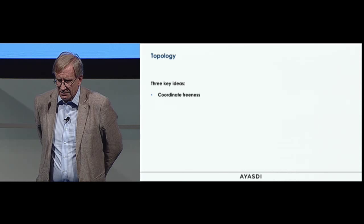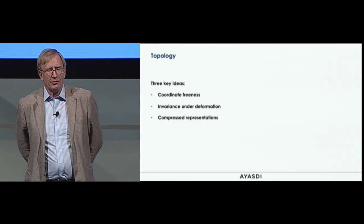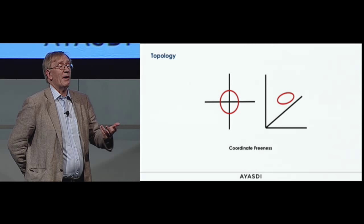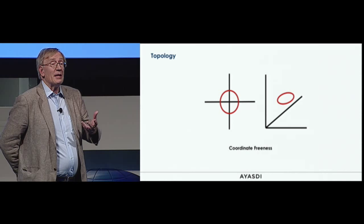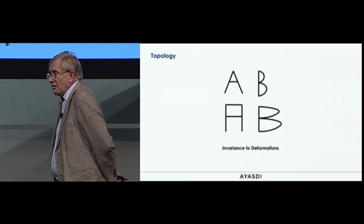Topology has three key ideas: coordinate freeness, invariance under deformation, and compressed representation. Coordinate freeness says it shouldn't matter so much how we represent the data set in terms of coordinates, provided that we're keeping track of the internal distances and similarities.